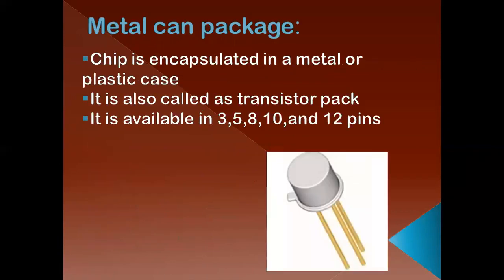The first one is Metal Can Package. In this package, the chip or IC is encapsulated in a metal or plastic piece — that means the chip is inserted in a metal or plastic piece. It is also called as Transistor Pack or TO Pack. It is available in 3, 5, 8, 10, and 12 pins. This is the structure of a metal can package.